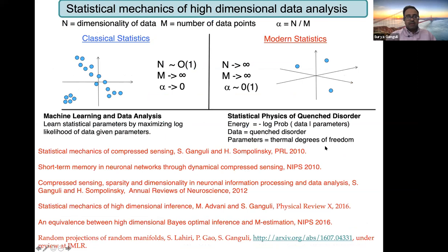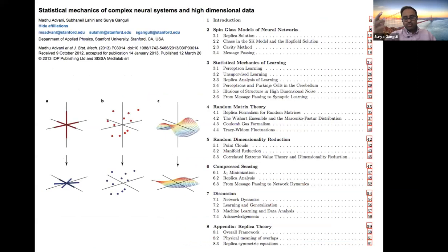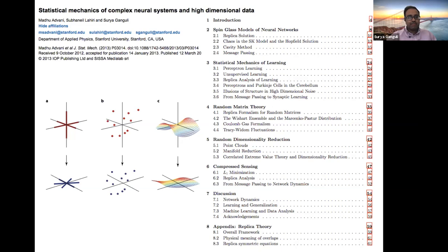High-dimensional statistics is a really interesting topic now — situations where you have high-dimensional data but not that many examples. The number of examples is proportional to the dimensionality of the data, but the ratio is order one. We reviewed this through the lens of physics in a review article discussing learning theory, random matrix theory, random projections, compressed sensing, and so forth, all in a unified language of physics, namely replica theory.